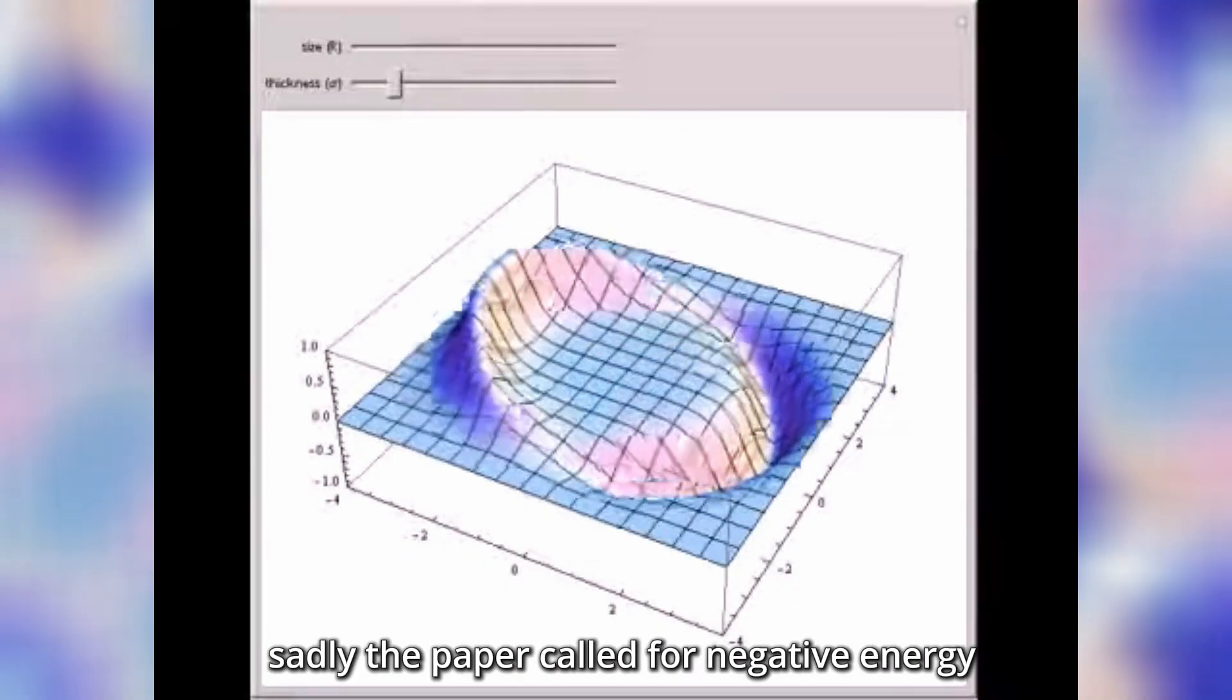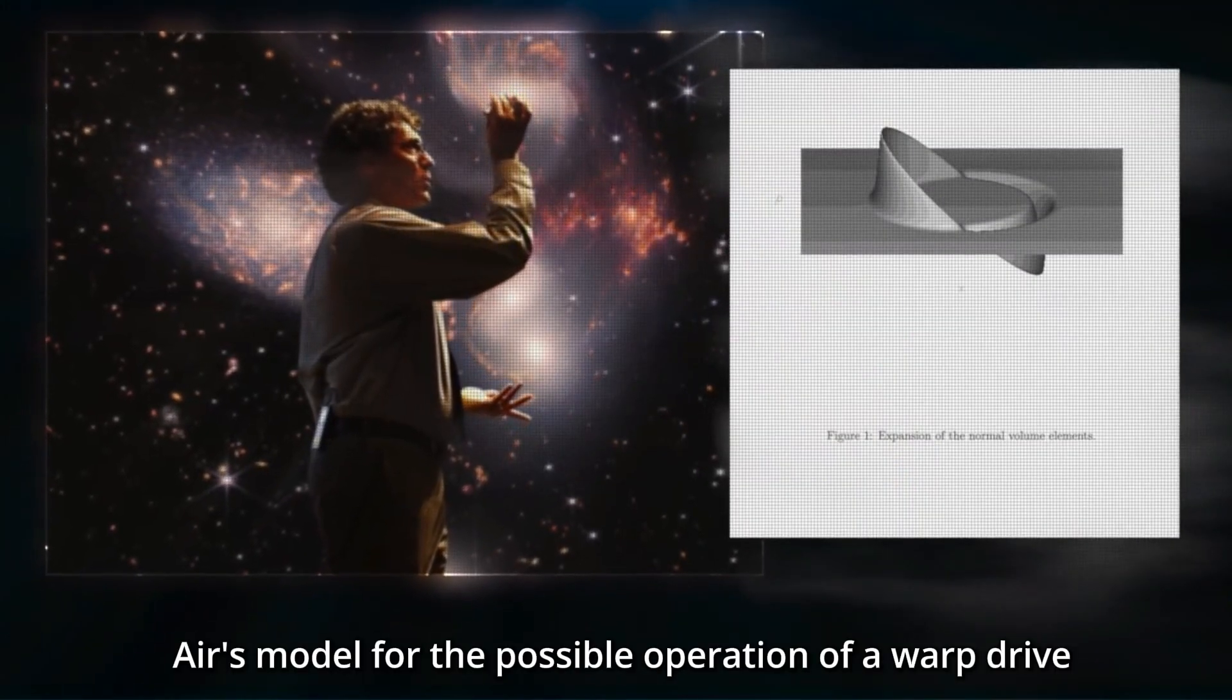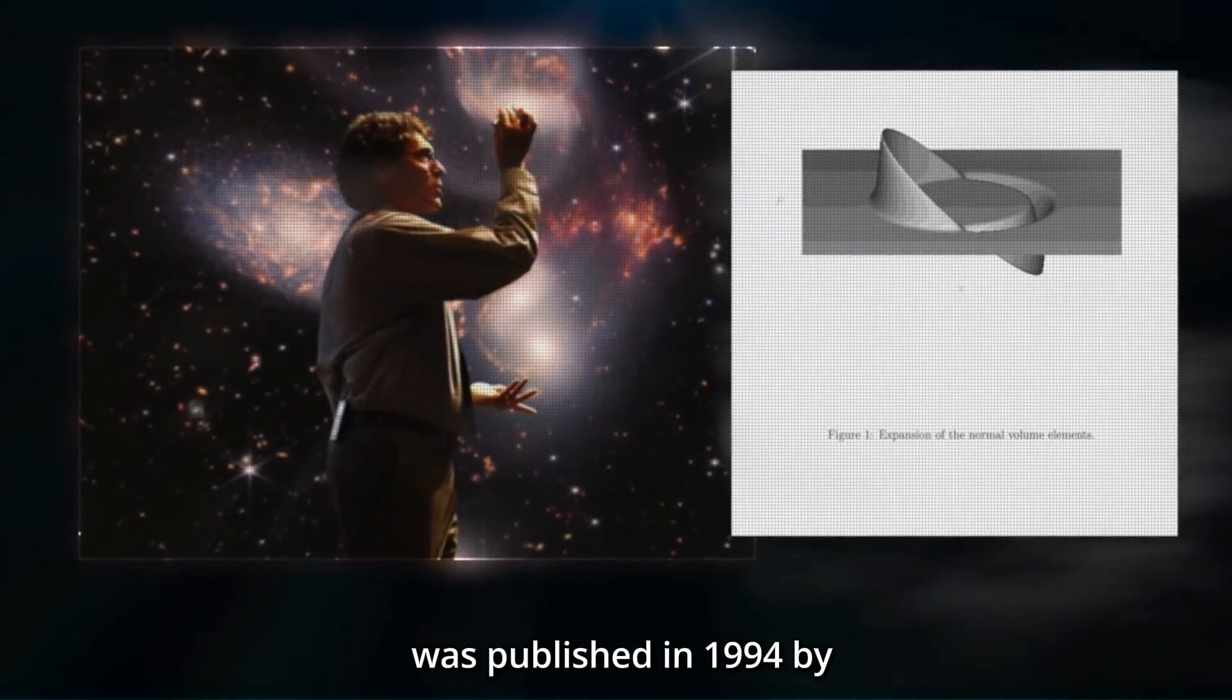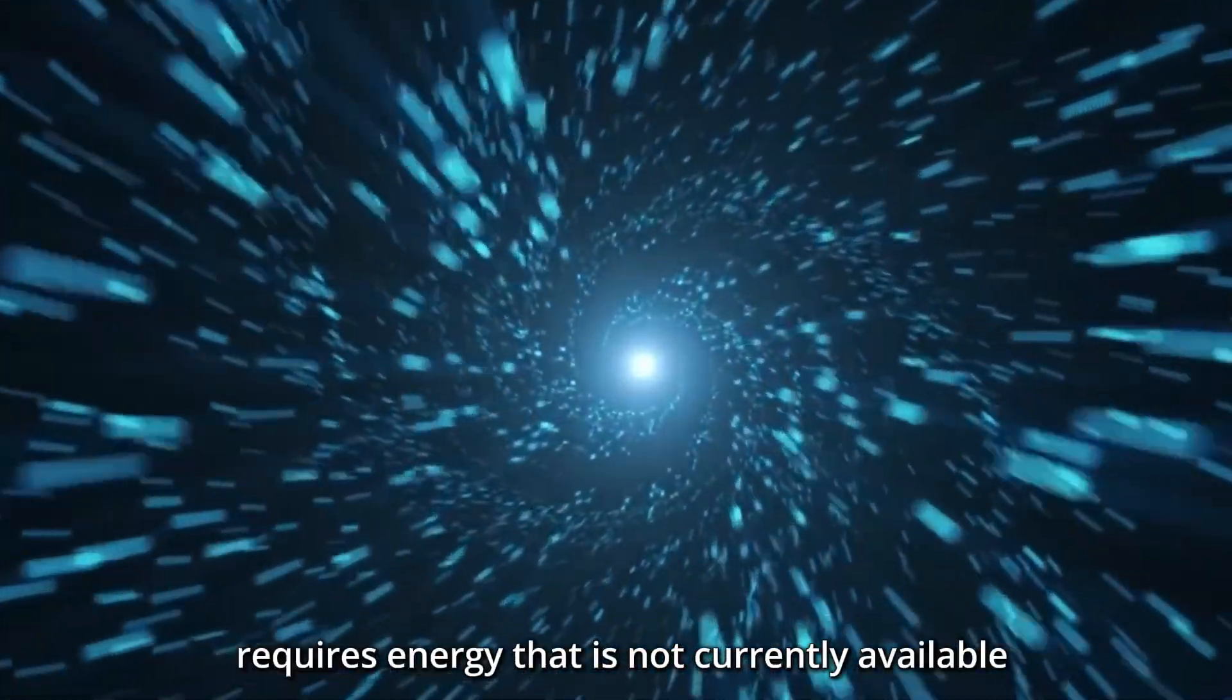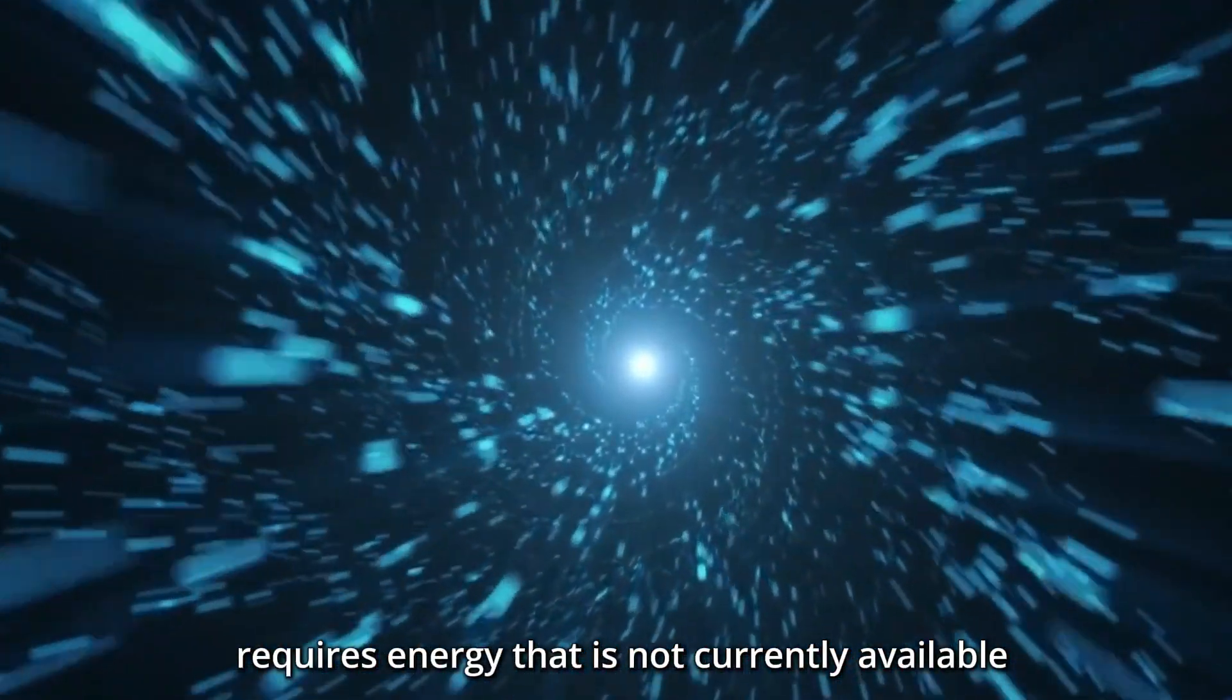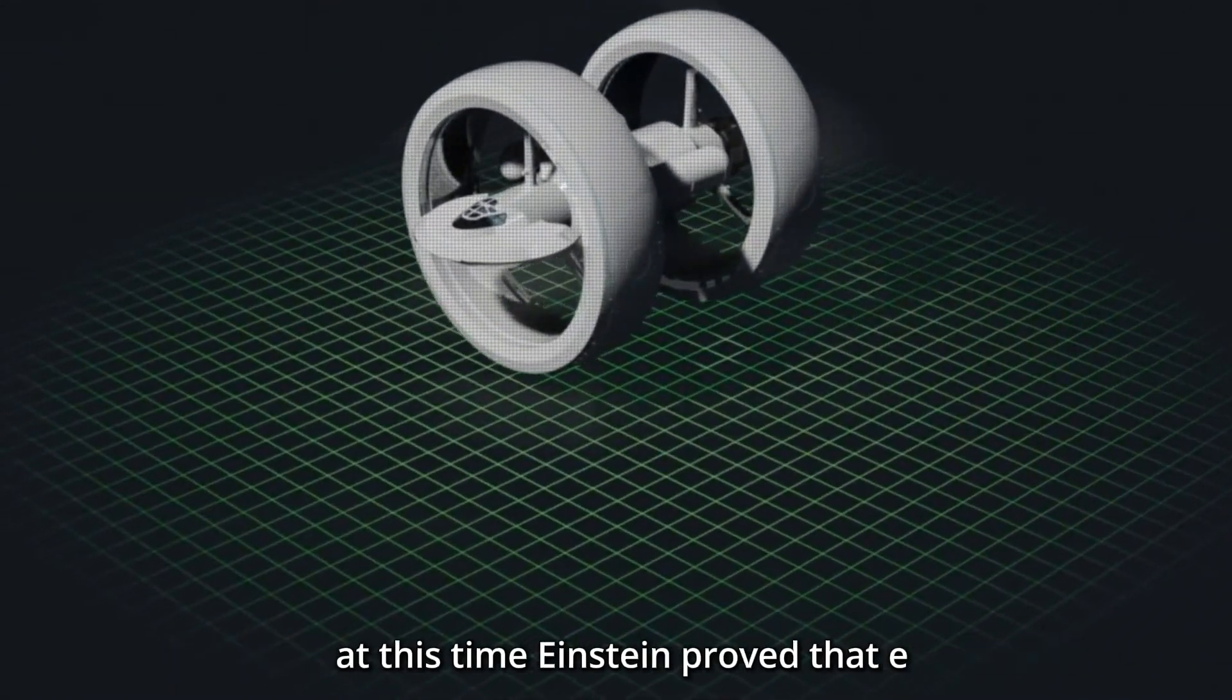Sadly, the paper called for negative energy, which is non-existent. Alcubierre's model for the possible operation of a warp drive was published in 1994. Warp speed requires energy that is not currently available, which is the main reason it is most likely unachievable at this time.